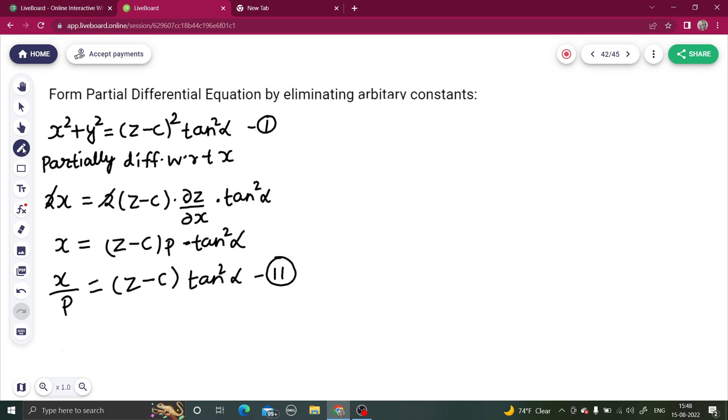Now, again partially differentiate with respect to y. Taking x as constant, you will get x square derivative is 0, you will get 2y equals to z minus c 2 times and del z by del y 10 square alpha.